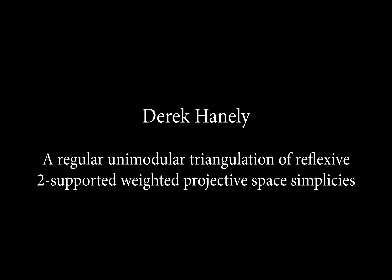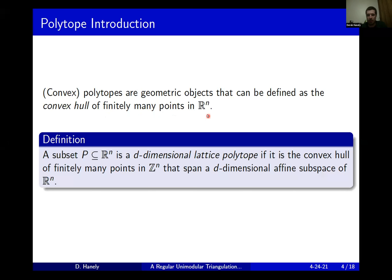A polytope is generally a geometric object that can be defined as the convex hull of a finite number of points in Euclidean space. So we can think about this informally: say you have a bunch of points in space, if you take saran wrap and tightly wrap it around that set of points, that object and all of the points contained inside the saran wrap is what we define as our polytope. If all of the vertices of the polytope happen to be integral, we call that polytope a lattice polytope.